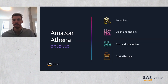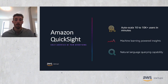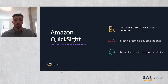Amazon Athena is a managed serverless interactive query service that makes it easy to analyze data directly in S3 using standard SQL. With a few actions in the AWS management console, you can point Athena at your data stored in S3 and begin using standard SQL to run ad hoc queries and get results in seconds. Amazon QuickSight is a business intelligence service you can use to deliver easy-to-understand insights to the people you work with, wherever they are. QuickSight connects to S3 and Athena as well as other sources. You can use Amazon QuickSight Q, which is powered by machine learning, to answer your business questions quickly with natural language processing.